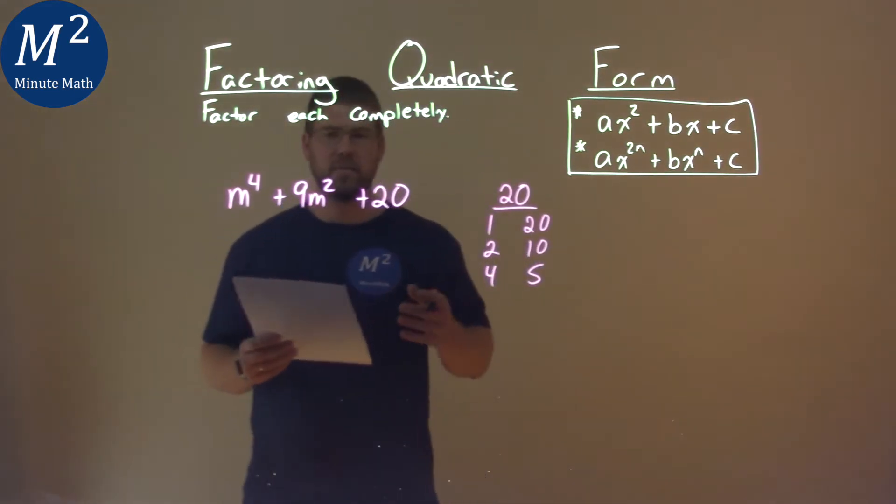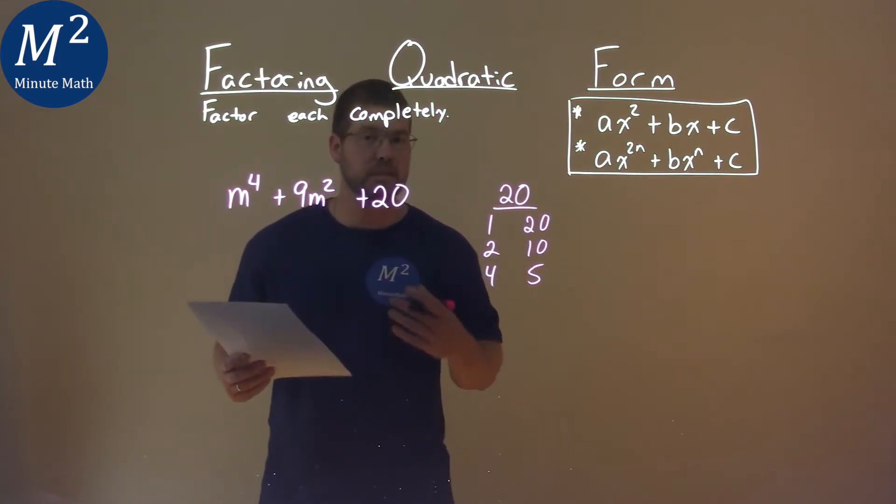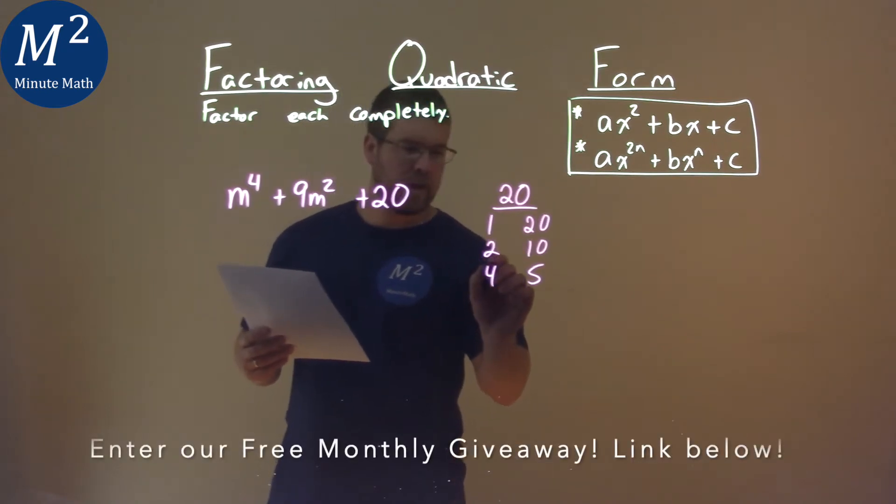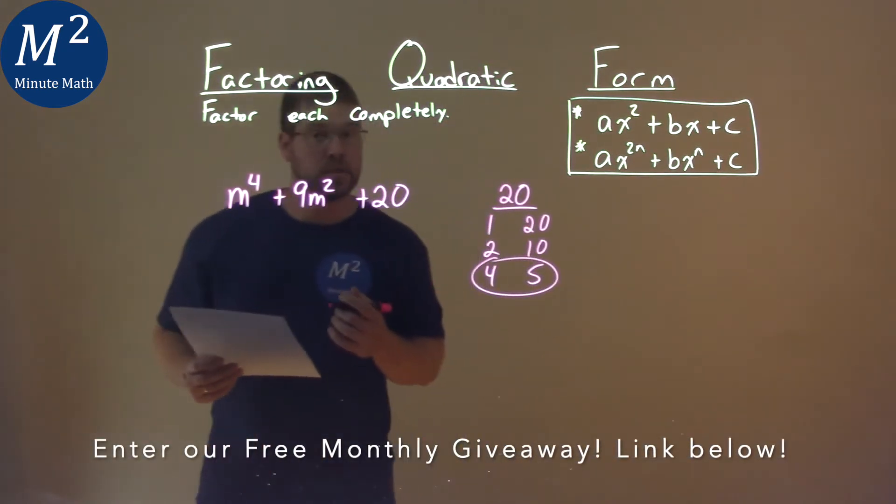Now, with these pairs, we're going to find which pairs add to b or b value, which is 9. Do you know it? The 4 and the 5. 4 and 5 add to be 9.